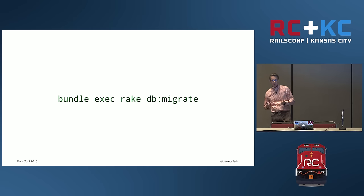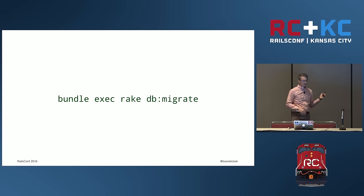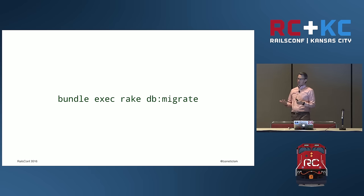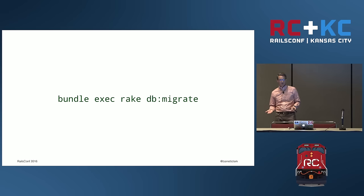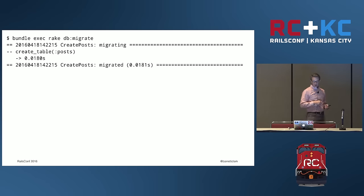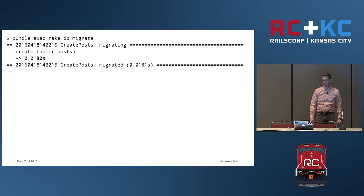To create our table, we'll use `bundle exec rake db:migrate`. Note the inclusion of `bundle exec` — Rake is a Ruby scripting utility so you could just run Rake, but we're in a Rails app and we want this to work in the context of our Rails app's Gemfile, and Bundler can help us with that. We run it, and we'll run the create post migration, and it's going to create the posts table.